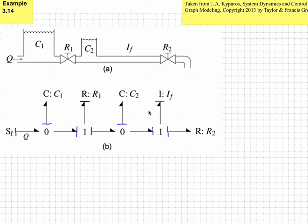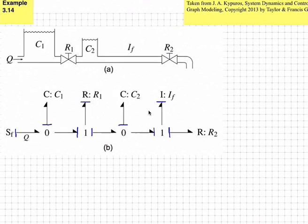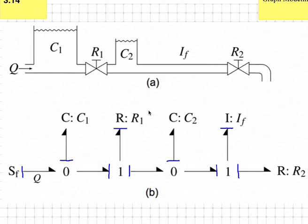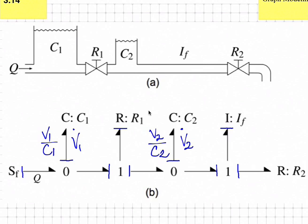We now need to determine the effort and flow at each energy storing element. For an accumulator, the state is going to be the volume, and the time rate of change of that volume is going to be our flow. So V1 over C1 will be the pressure, or the effort. Similarly, the volume of the second accumulator will be the state, and the time rate of change of it will be the volumetric flow rate. The second volume over the capacitance of the second accumulator will be the pressure at the bottom of that accumulator.